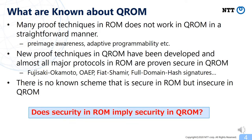Here, I would like to review what is known about the Q-ROM. As pointed out by the first work by Bonnet et al., many proof techniques in the ROM don't work in the Q-ROM, at least in a straightforward manner. Those techniques include pre-image awareness and adaptive programmability. Therefore, in the past decade, new proof techniques in the Q-ROM have been developed, and this line of research made a great success. Now almost all major protocols in the ROM are also proven secure in the Q-ROM — those protocols include Fujisaki-Okamoto, OAEP, Fiat-Shamir, and Full Domain Hash. There is no known scheme that is secure in ROM but insecure in Q-ROM. Then it is natural to ask: does security in ROM imply security in Q-ROM? This is our main question.